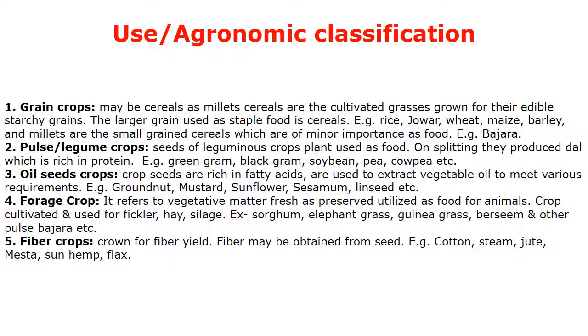Fiber crops are grown for fiber yield obtained from seed or stem. Examples include Cotton, Jute, Mesta, Sunn Hemp, and Flax.